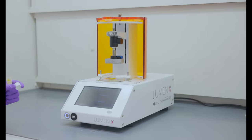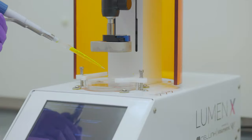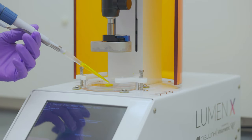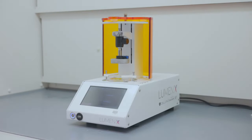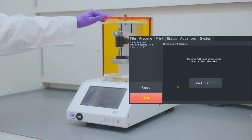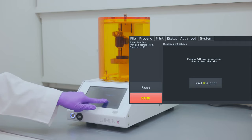Now, add 1 ml of the photo ink into the vat. Close the light shield and tap on start the print.